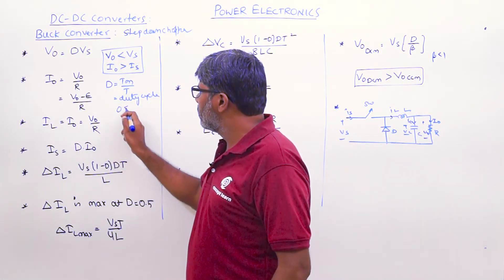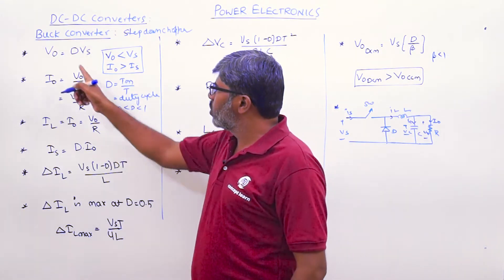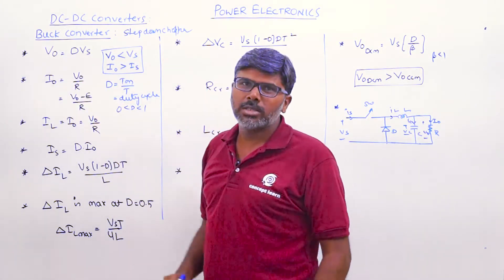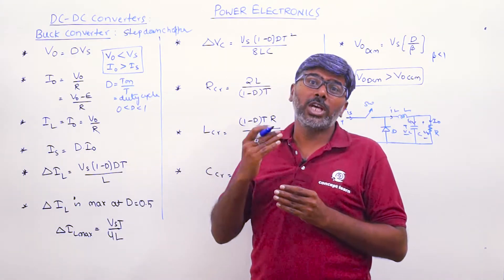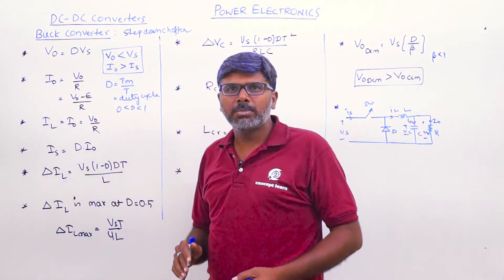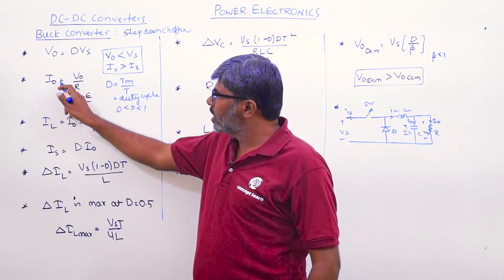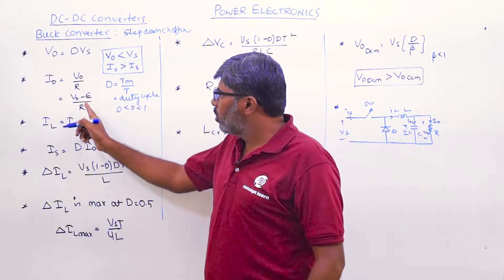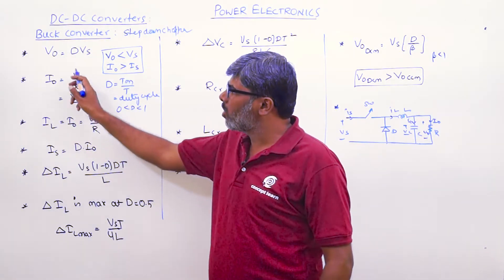D is the duty cycle — the ratio of on-time to total time — and it varies between 0 and 1. If duty cycle is 0, V0 = 0; if duty cycle is 1, V0 = Vs. So output voltage always varies between 0 and Vs, never exceeding Vs — that is why it is called a step-down chopper. The load current I0 = V0/R for R or RL load, or I0 = (V0 − E)/R for RLE load.